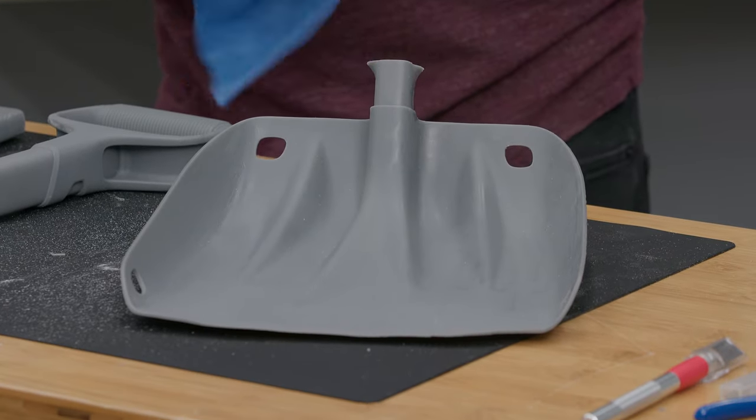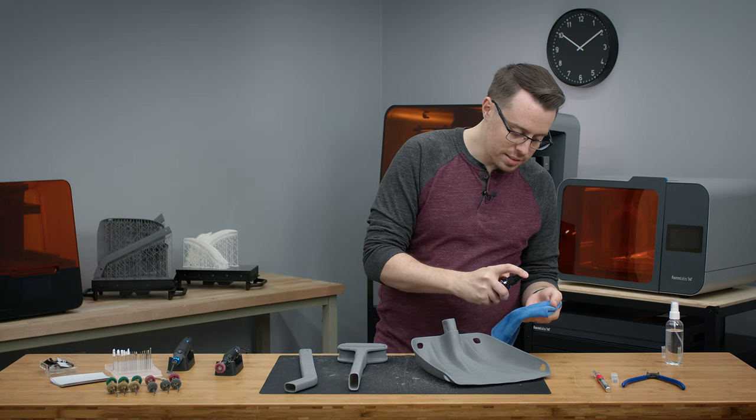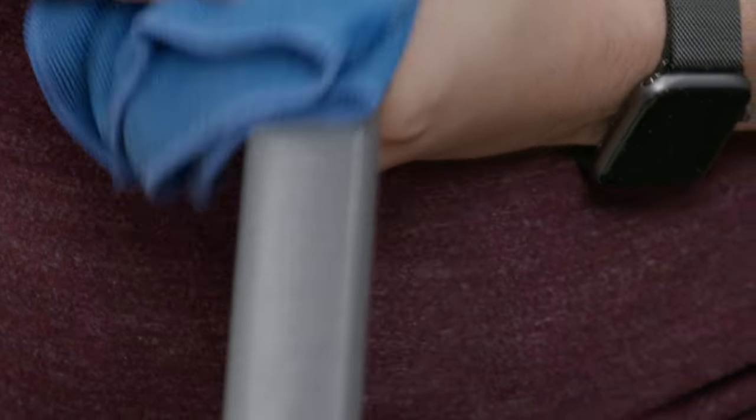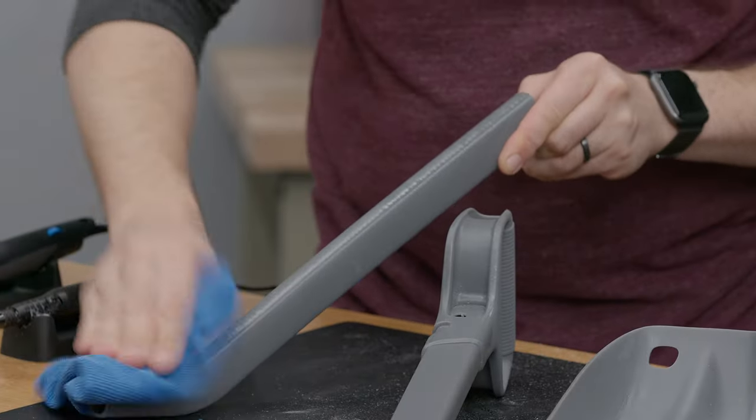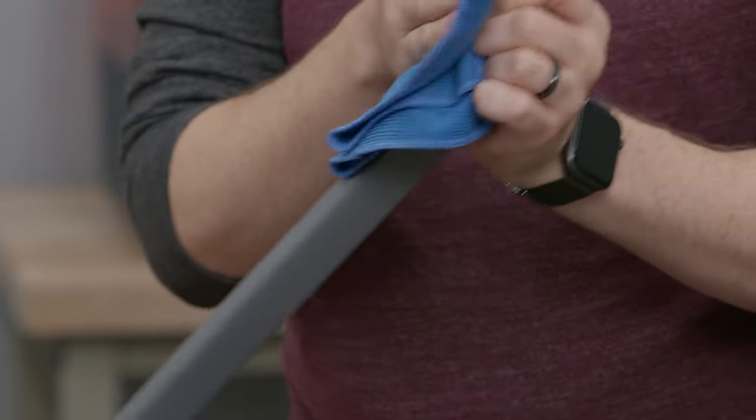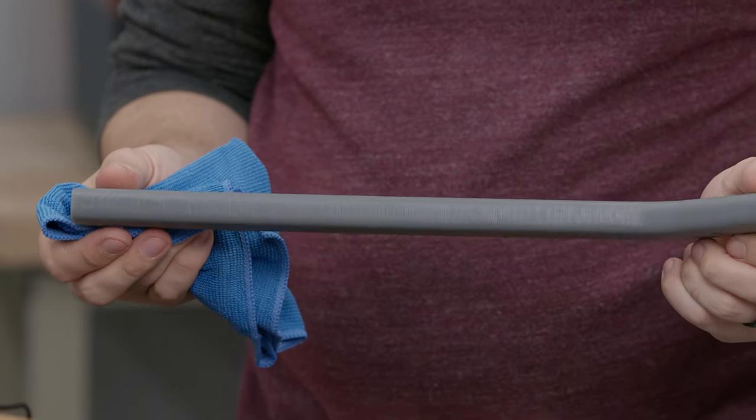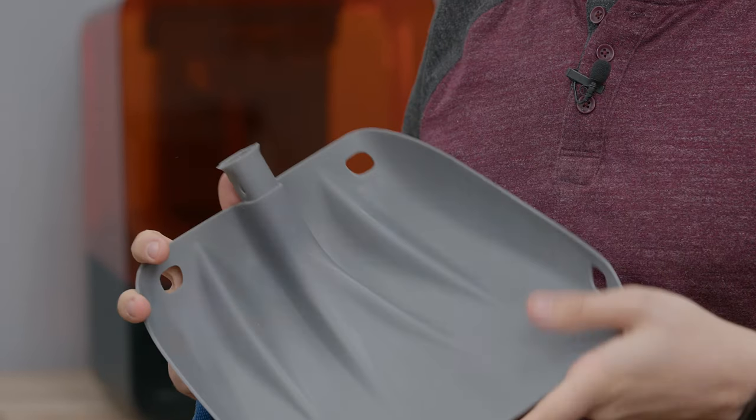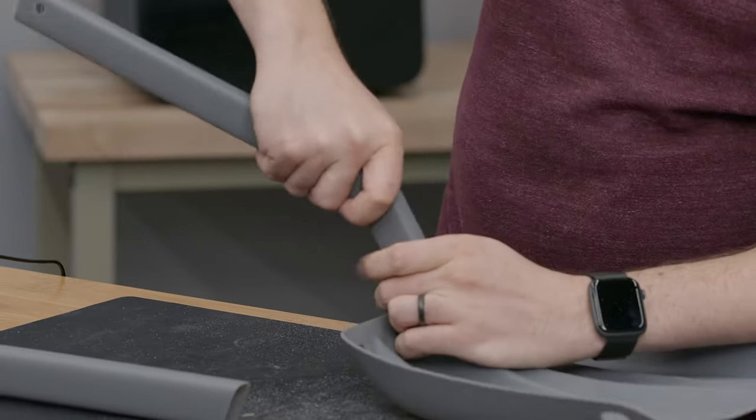Looking good so far. Let's get these last two pieces done here. And we're almost home free. And so as we can see, that mineral oil makes a really big difference in the finished product. So now that we're done with our buffing and mineral oil wipe down, we'll go ahead and assemble the shovel. These parts just slot right in.